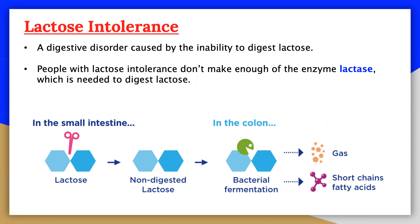For some people, the inability to synthesize sufficient lactase enzymes increases with age, and this genetic disorder is known as lactose intolerance. Lactose intolerance is a digestive disorder caused by the inability to digest lactose. People with lactose intolerance don't make enough of the enzyme lactase, which is needed to break lactose down into glucose and galactose so they can be absorbed into the bloodstream and used for energy. Without sufficient lactase, lactose moves through the gut undigested. Some of the unhydrolyzed lactose passes into the colon where it tends to draw water from the interstitial fluid into the intestinal lumen by osmosis.